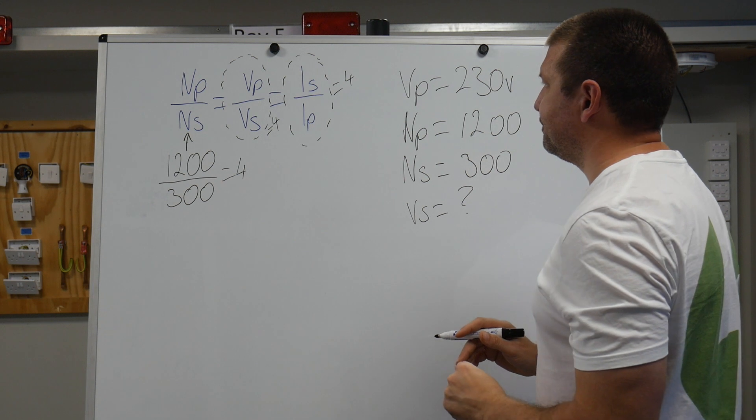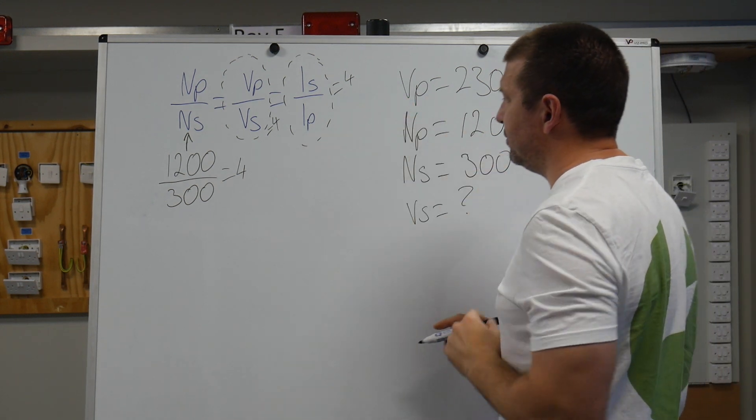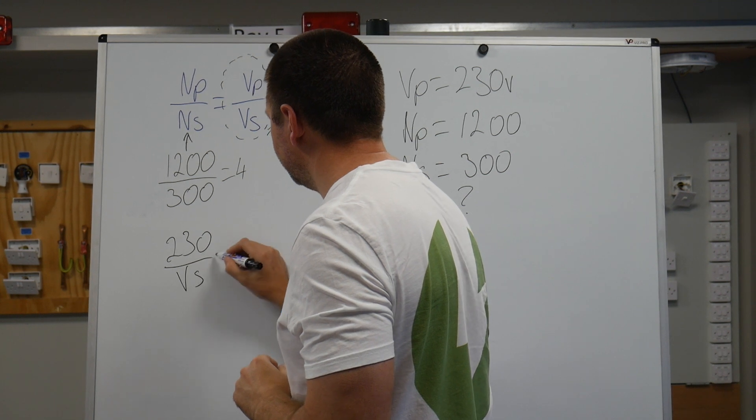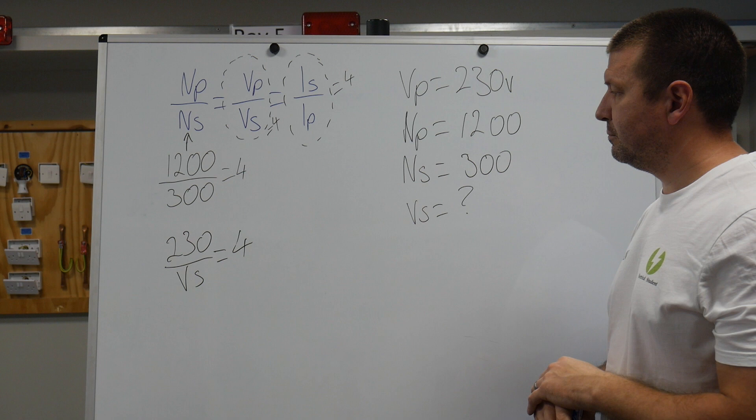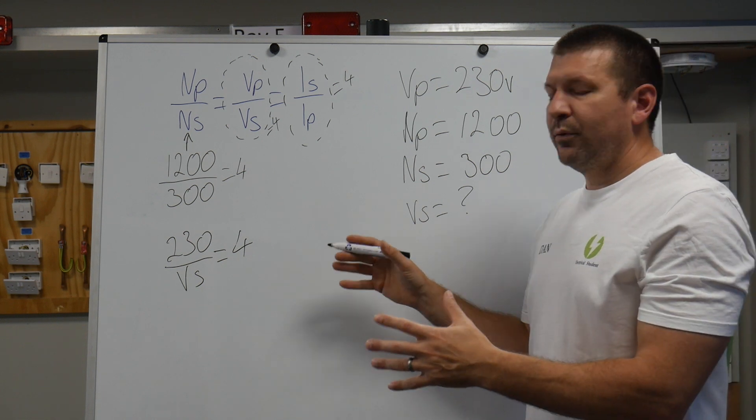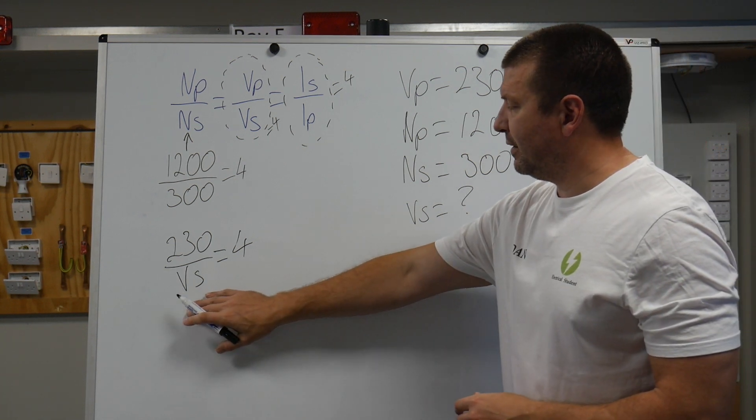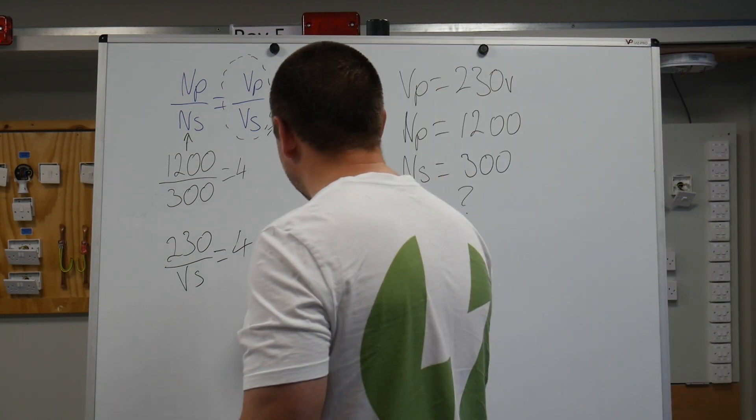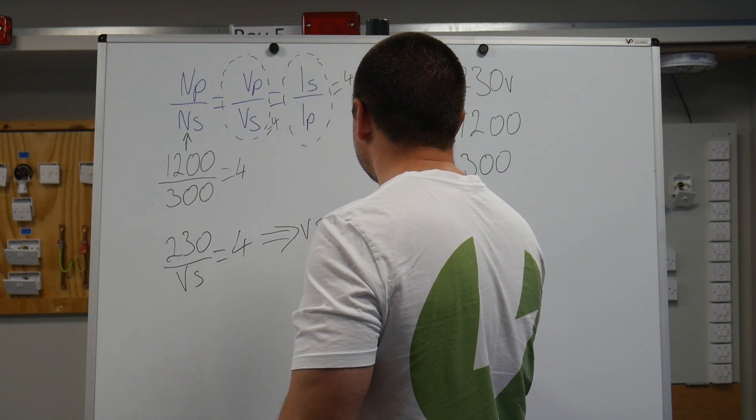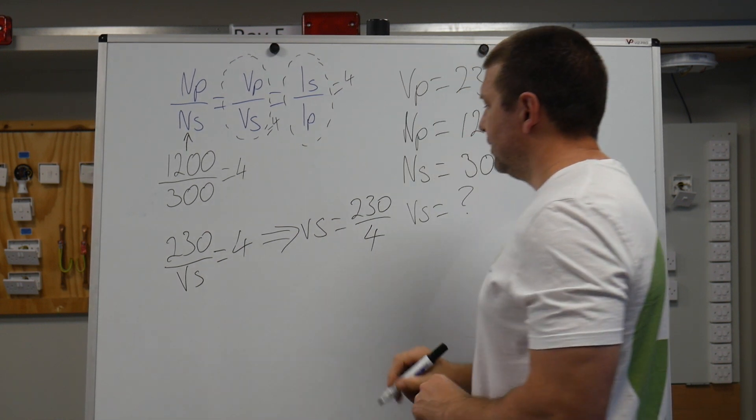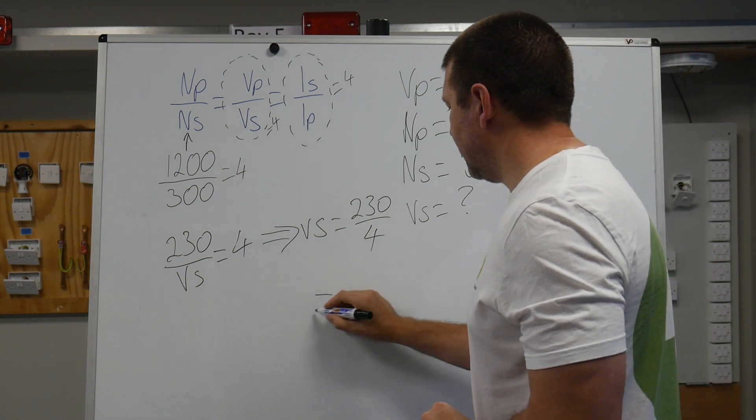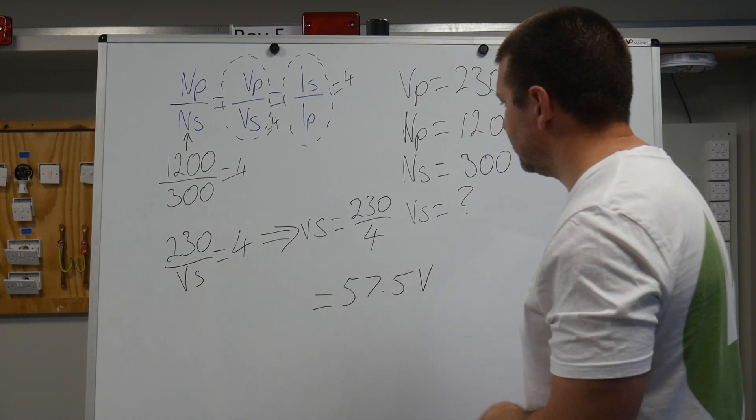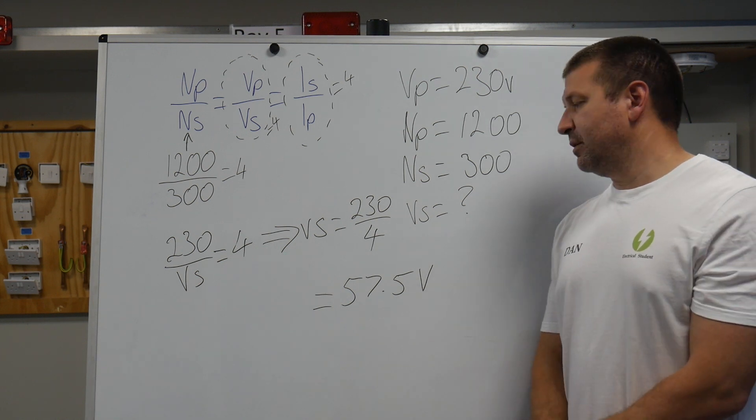Let's look at this a bit closer. We've got Vp which is 230. So we say 230 over Vs equals 4. That's what we're saying. Now we can easily transpose that. So we end up having Vs equals 230 divide 4. And the answer to that is 57.5 volts. And that is the other way that we can use this transformer formula.